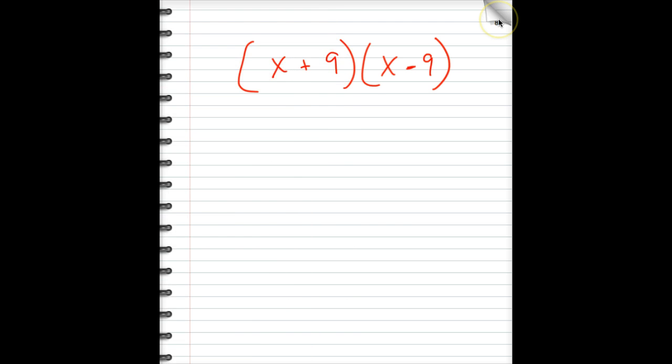More examples yet to come. This one's interesting. This is a binomial times a binomial. And notice that the quantities are the same, except here you have positive. Here you have negative. Okay, this will cause the outside and the inside terms to drop out, as you will see. FOIL, x times x for the first. x². Outer terms, x times minus 9, negative 9x. Inside terms, 9 times x is positive 9x. Last, I'm sorry, positive 9 times negative 9 is minus 81.